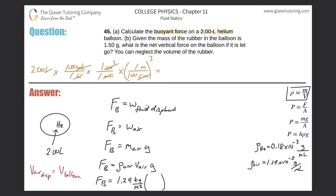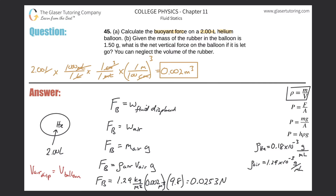So two times 1000 divided by 100 cubed gives 0.002 cubic meters. Plugging in: buoyant force equals 1.29 kilograms per cubic meter times 0.002 cubic meters times 9.8 m/s². Calculating 1.29 × 0.002 × 9.8, the buoyant force on the balloon equals 0.0253 newtons.